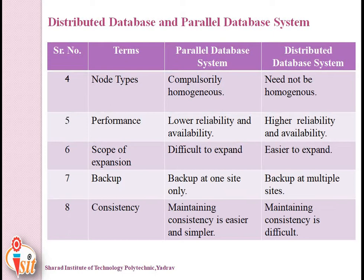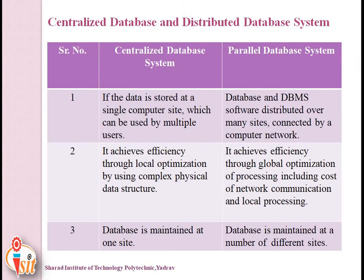Now we will see the last point of our second unit: the difference between centralized database and parallel and distributed database systems. A centralized database system is one where data is stored at a single computer site which can be used by multiple users. In a parallel database system, the database and database management system software are distributed over many sites connected by a computer network.